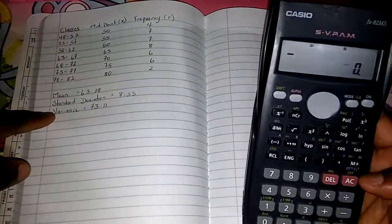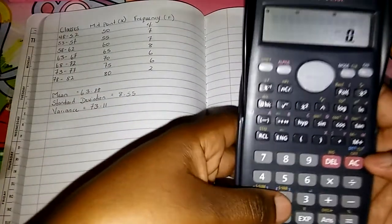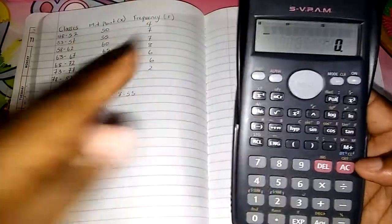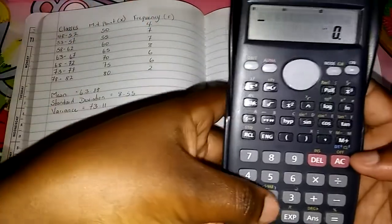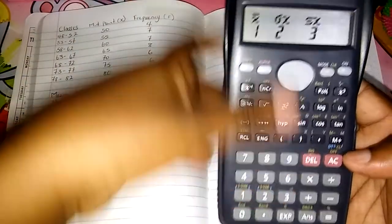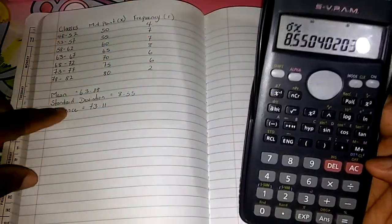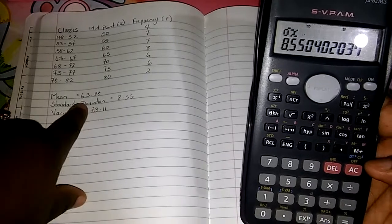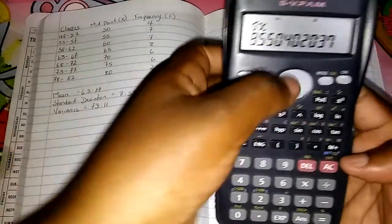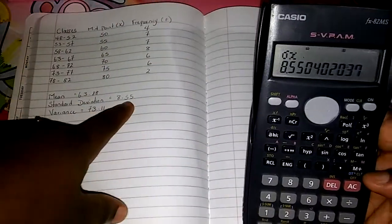We're now going to prove the standard deviation. Shift again. We're going to press number 2 for the VAR, for the variance, because we know that everything is already in the memory. So we're just going to find what we're looking for. And we're now going to select number 2. And this is the standard deviation. So that is 8.55. We don't need the rest of the numbers. 8.55, correct.